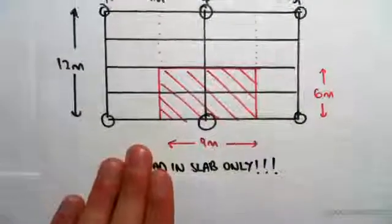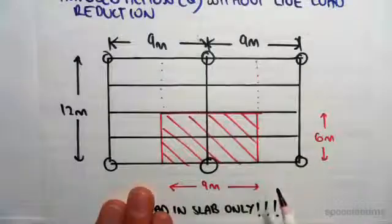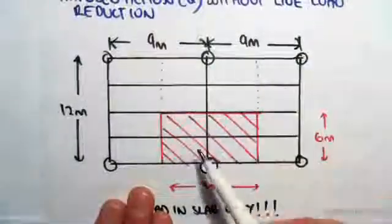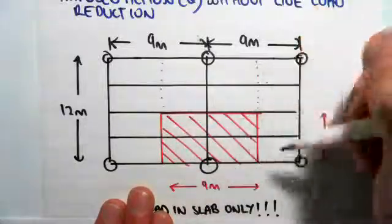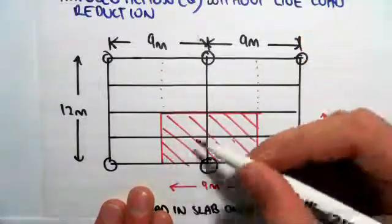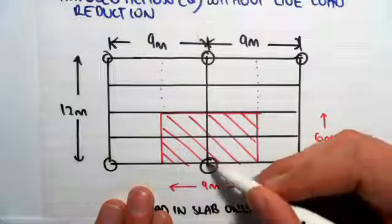So to make it a little bit simpler for us, we can just take our typical floor and we can split up the amount of tributary area for each column. So I hope it's fairly obvious how I've done this. So if we look at this column, this amount of tributary area is going into that column over there.